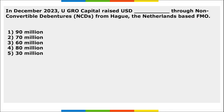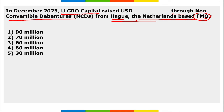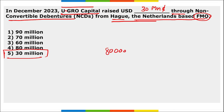Next: Ugro Capital has raised 30 million dollars through non-convertible debentures from FMO, a Netherlands-based organization. Remember that Ugro Capital has offered credit to more than 80,000 small businesses over the last five years.